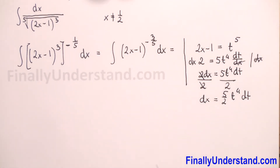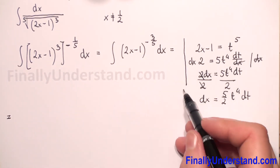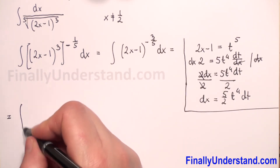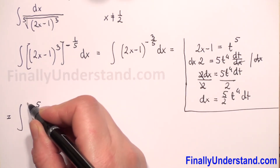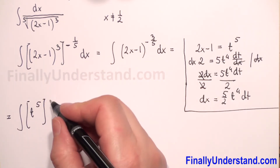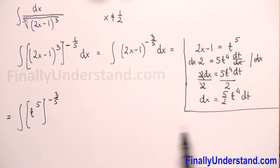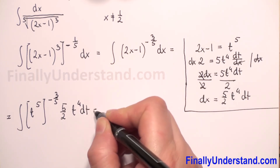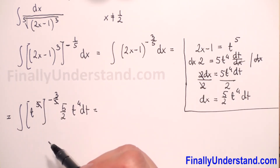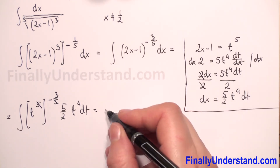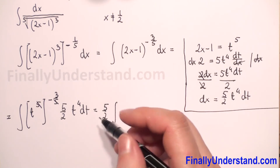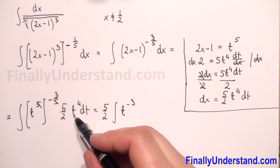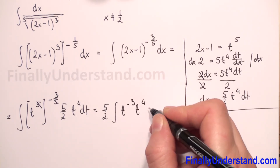Now we rewrite our integral using the substitution. Since 2x minus 1 equals t to the 5th power, we replace (2x minus 1) to the power negative 3 over 5 with t to the power negative 3. Then dx is replaced by 5 over 2 times t to the 4th power dt. We place the constant 5 over 2 before the integral symbol, leaving the integrand as t to the power negative 3 times t to the power 4.